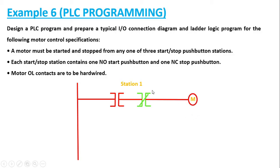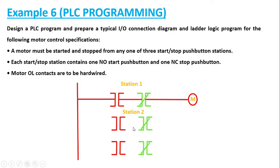Now, the motor must be started or stopped from any one of the three stations — the phrase 'any one' is clearly an indication of OR gate operation. If you've missed the video on how to analyze OR gate operation with respect to PLC, please do watch it. For station 2 and station 3, we will have the same number of contacts. For OR operation, we have to connect them in parallel.